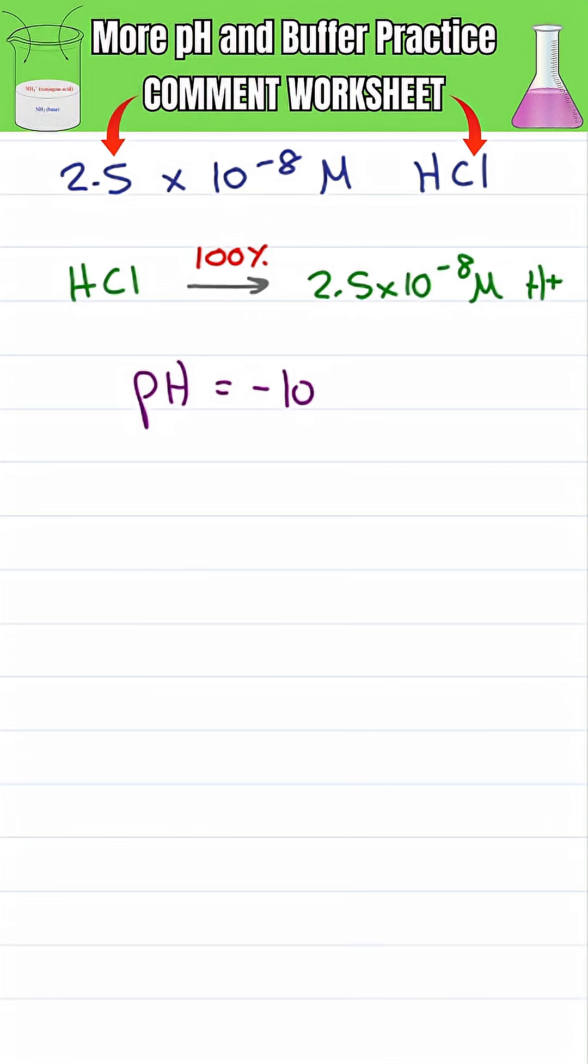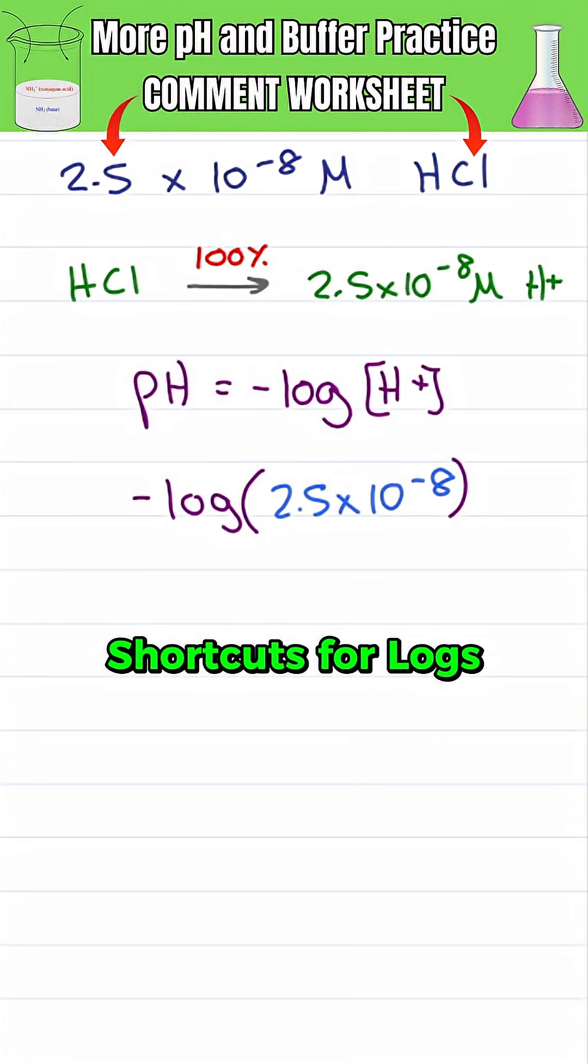To find the pH we do negative log H plus which is negative log 2.5 times 10 to the minus 8. The shortcut for logs without a calculator is to first round your base to the nearest one and then take the absolute value of your power, in this case 8, giving me pH is equal to 8.